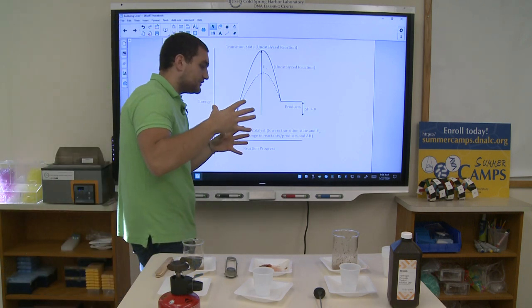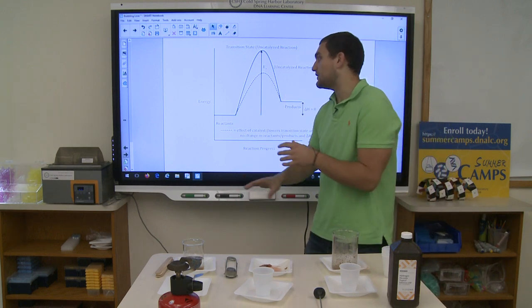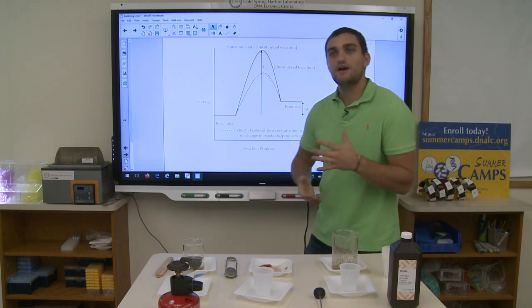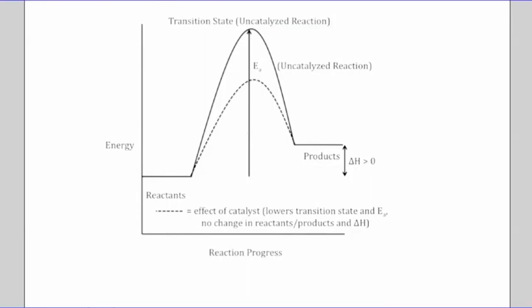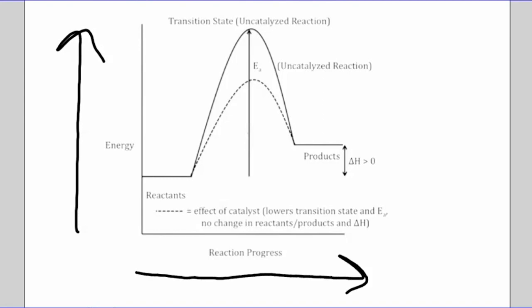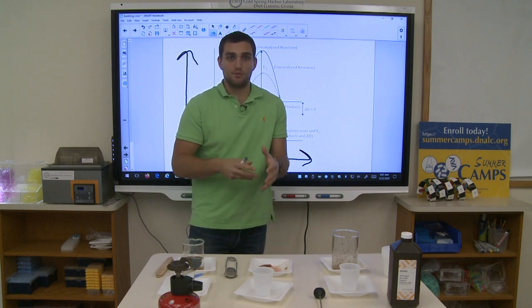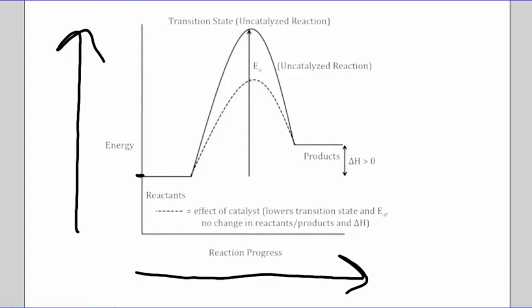Let's look at our first reaction diagram. If you look at the y-axis, we have energy increasing in that direction, and on the x-axis we have reaction progress, which can be considered time — though we don't put a scale on it since this is a purely thermodynamic picture. Here I have the energetic state of the reactants, and here the energetic state of the products. The first thing to notice is the reactants have a lower energetic state than the products.